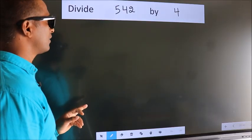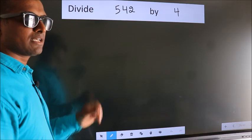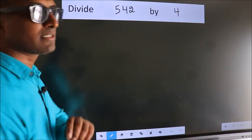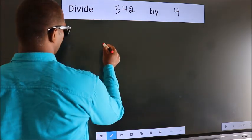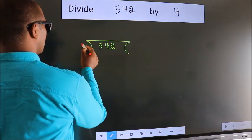Divide 542 by 4. To do this division, we should frame it in this way: 542 here, 4 here.